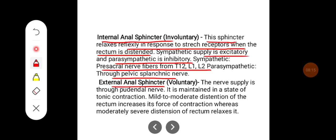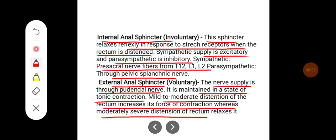External anal sphincter: the nerve supply occurs through the pudendal nerve. It is maintained in a state of tonic contraction. Mild to moderate distension of the rectum increases its force of contraction, whereas moderately severe distension of the rectum relaxes it.